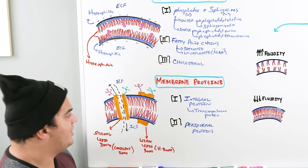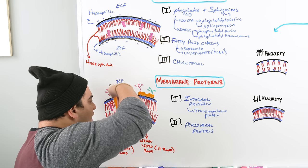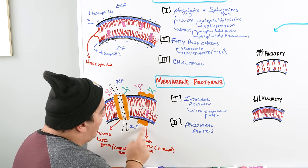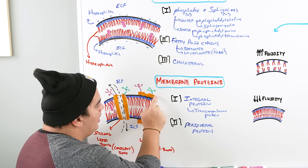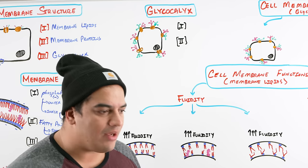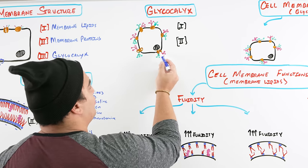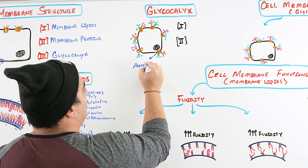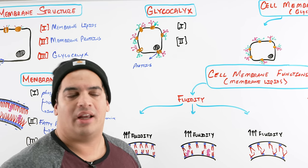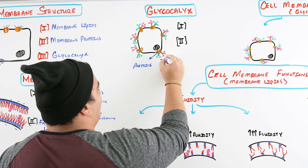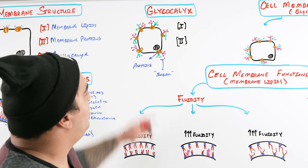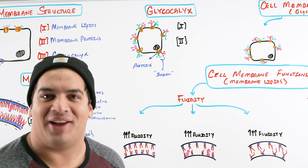So to summarize: membrane proteins are either integral — fully embedded and spanning the membrane as transmembrane proteins with a strong bond — or peripheral, which have weak electrostatic or hydrogen bonding and do not span the membrane. Now let's talk about the glycocalyx. The glycocalyx consists of the proteins of the cell membrane with sugar residues, called oligosaccharides, linked to them. When a protein combines with a sugar, we call that a glycoprotein, and these form a powerful network on the outside of the cell.